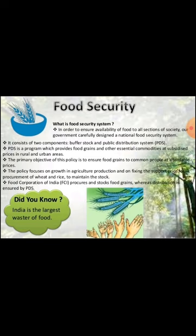PDS is a program which provides food grains and other essential commodities at subsidized prices in rural and urban areas. The primary objective of this policy is to ensure food grains to common people at affordable prices. The policy focuses on growth in agricultural production and on fixing the support price for procurement of wheat and rice to maintain the stock.